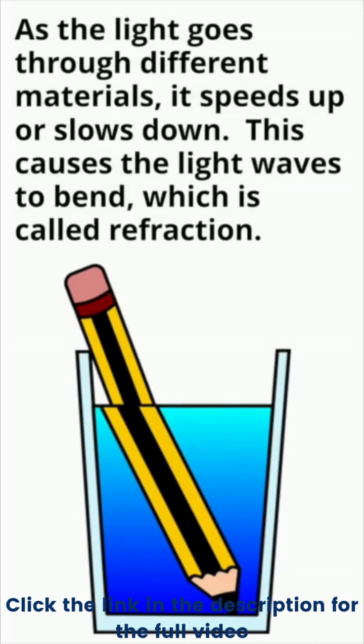As the light goes through different materials, it speeds up or slows down. This causes the light wave to bend, which is called refraction.